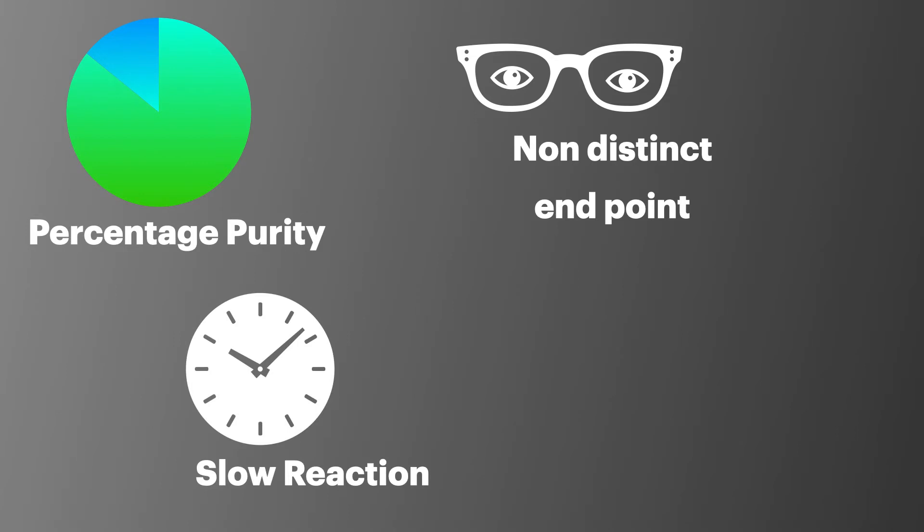There are a variety of different reasons to carry out a back titration. For example when you want to calculate the percentage purity of an insoluble compound, when the end point of titration would be difficult to see, the reaction is very slow, or when you want to work out the amount of water attached to a compound in its hydrated state. Percentage purity and water of crystallization are more common in your final exams.